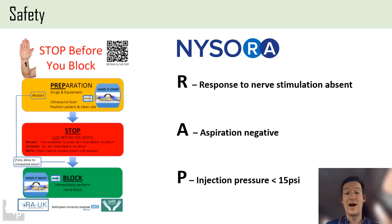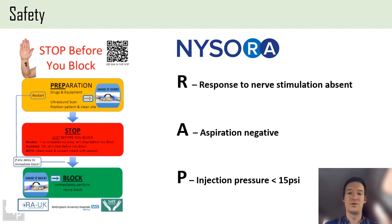Another safety concept is the RAP, pushed heavily by NYSORA. These are three things to think about just before you inject. R - Response to nerve stimulation: is it absent at 0.5 milliamps? If so, you can proceed - it's probably not in a nerve. A - Aspiration: is it negative? If so, you're probably not in a vein or artery. P - injection Pressure: manometers set at around 15 psi - if pressure is less than 15 psi, it's very unlikely you're in a nerve; if more than 15 psi, you could be in a nerve. That's an extra layer of safety.